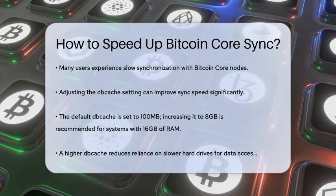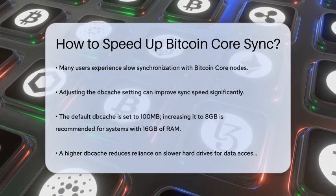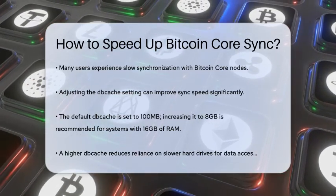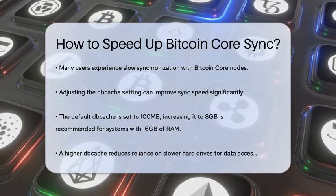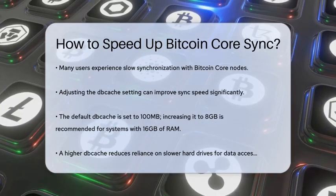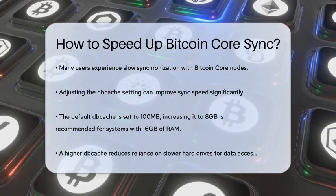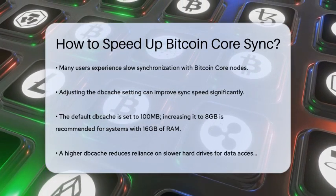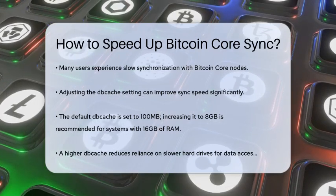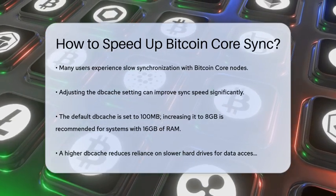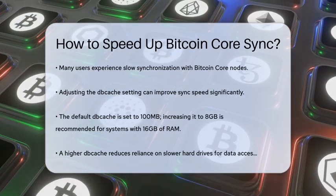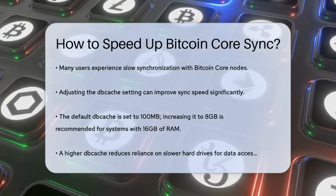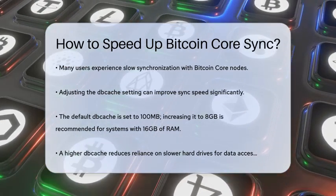First, let's talk about the dbcache setting. This parameter controls how much memory the Bitcoin Core client uses for caching. By default, it's set to 100 megabytes, but you can increase this to significantly speed up the sync. For example, if you have 16 gigabytes of RAM, you can set the dbcache to 8 gigabytes, or 8192 megabytes. This reduces the need for the client to use the hard drive, which is much slower than RAM.